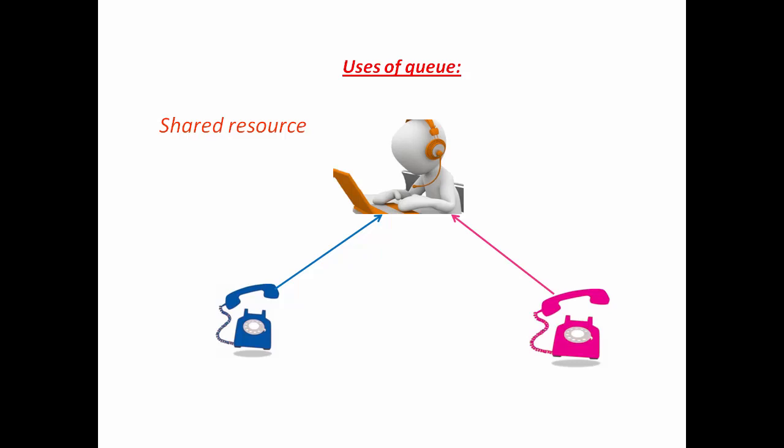For example, call center phone system. Anyone calls the call center to solve their problem or to ask something, but a service representative takes only one call at a time. So if a call comes when the service representative is busy with another person, then what happens? In such situation, the program that manages the call puts the request in the queue. When the service representative is free, they take the call from the front of the queue.